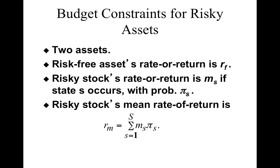Let's figure out how to represent the budget constraint for risky assets. Take a simple case: suppose there are two assets. There is a risk-free asset whose rate of return we call RF. A risk-free asset is one whose rate of return doesn't vary at all — think of a three-month government security, which is most often referred to as the risk-free rate. The risky stock's rate of return is given by m with subscript s if state s occurs with probability π_s. This should remind you of the state-contingent commodities we talked about last time.